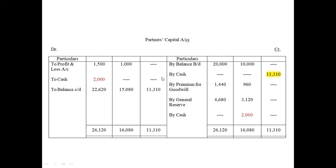We write the balances from the balance sheet: 20,000 for A and 10,000 for B. We write 'By Balance B/D' and then 'By Cash' after that, but that cash amount should be left blank for now.